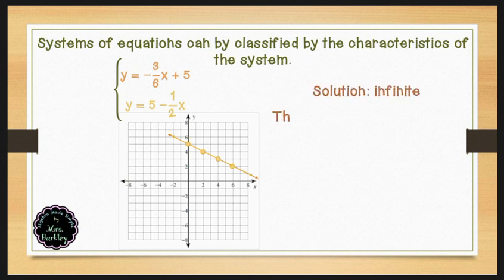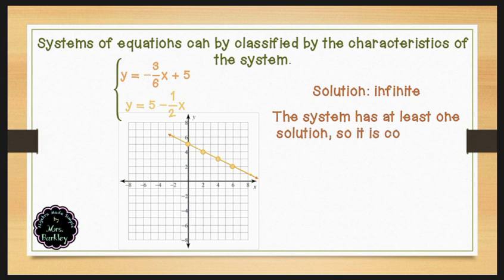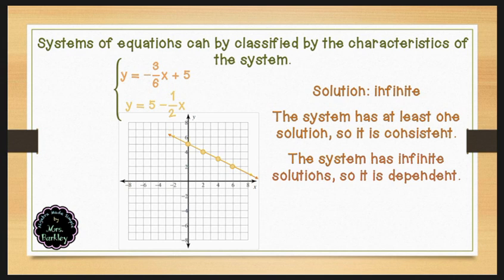In this situation, we have infinite solutions. Since it has at least one solution, it is consistent. The lines are actually the same line — you can see that there's an overlay. If we simplify the slope of negative 3/6, that gives us a slope of negative 1/2, confirming our lines are the same line. With infinite solutions, this system is classified as being consistent and dependent.